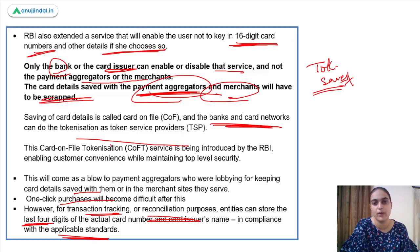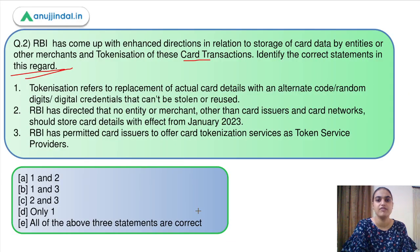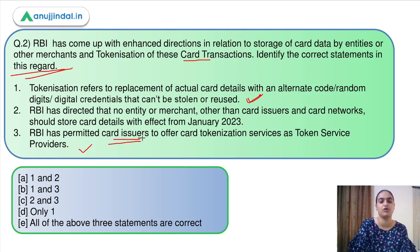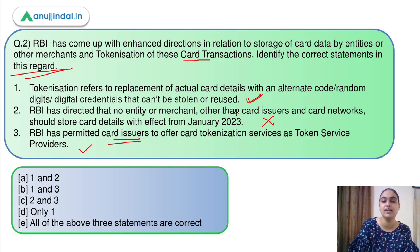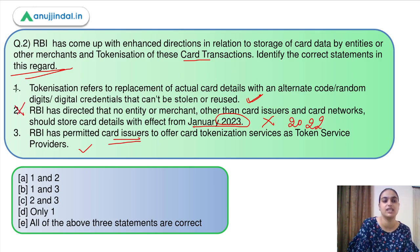The above enhancements are expected to reinforce safety and security of card data, ensure convenience in card transactions, and improve customer data security while offering the same convenience currently provided. Moving back to the question, statement one is correct as it defines tokenization; statement three is also correct as card issuers are permitted for tokenization. Statement two is incorrect because it says no entity or merchant can save data other than card issuer and card network from January 2023 — the correct date is January 2022. So the answer is option B.